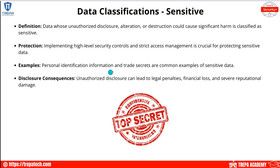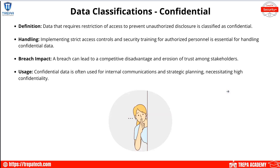Examples of sensitive data include personally identifiable information and trade secrets. The term 'sensitive' is generally used on the commercial side. Confidential data requires restriction of access to prevent unauthorized disclosure, and we need to implement strict access controls and security training for authorized personnel handling confidential data.